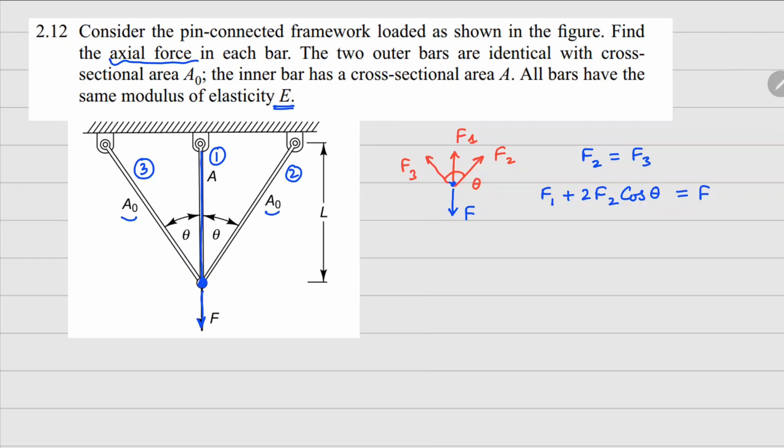Basically we have three unknowns here: F1, F2, and F3. We have only two equations, so we are short one equation. How do we solve for the third one? We are going to look at the geometrical compatibility.